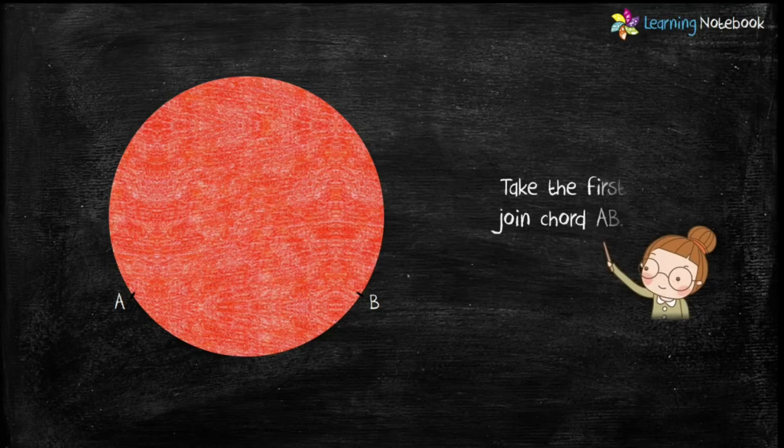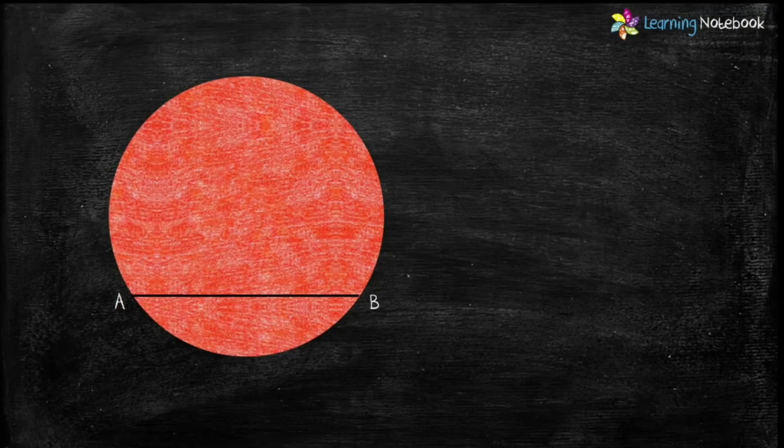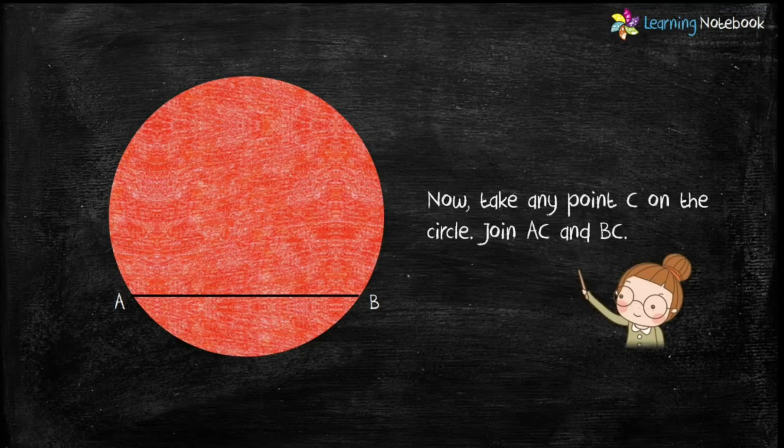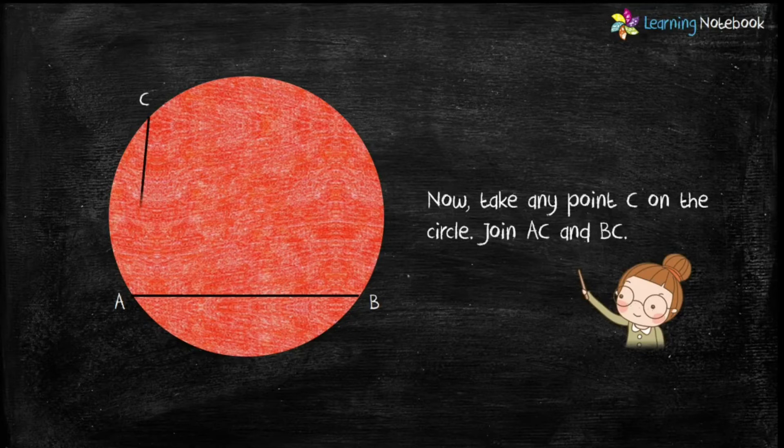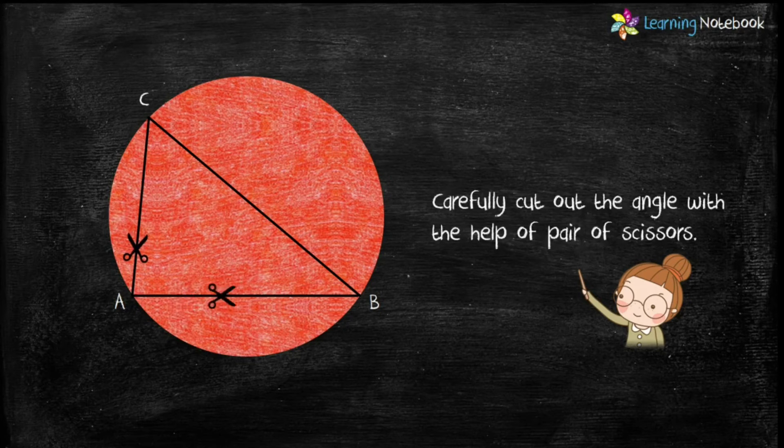Next, take the red circle and join chord AB. Now, take any point C on this red circle and join AC and BC. Now, carefully cut out the angle with the help of a pair of scissors.